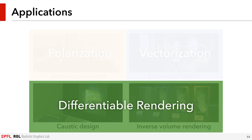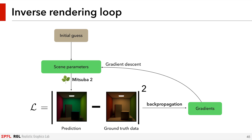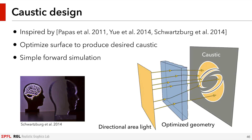Now let's have a look at our differentiable rendering applications. As mentioned before, we can use a differentiable renderer inside a gradient descent loop to solve inverse problems. We only need to implement a suitable differentiable forward rendering method and define an appropriate loss function. One application of differentiable rendering is caustic design. The problem in caustic design is to optimize a surface to produce a certain caustic when illuminated by a light source. In our setup, we optimized the displacement of the back surface of a transparent slab to produce a target caustic.